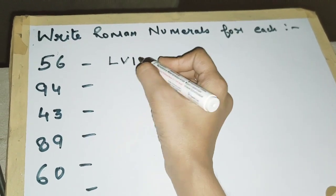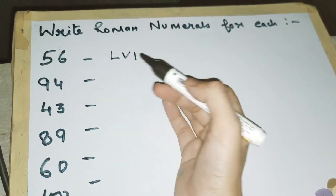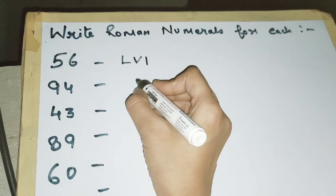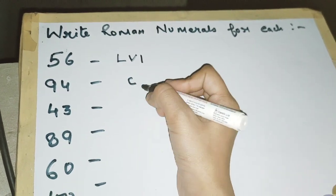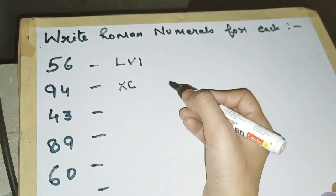Now for 94, we write C (that is 100) first. Then to subtract, we write X on the left side, and then for 4 we write I then V. This is 94.